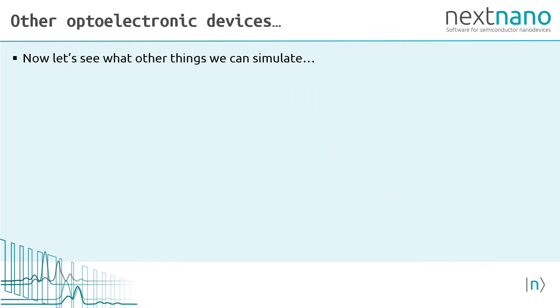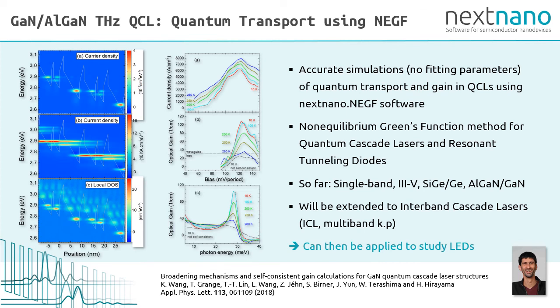Now let's see what other things we can simulate. Other optoelectronic devices made from nitride semiconductors that we were investigating are quantum cascade laser type structures. We apply the non-equilibrium Green's function method, NEGF, to study the quantum transport and gain in these devices.